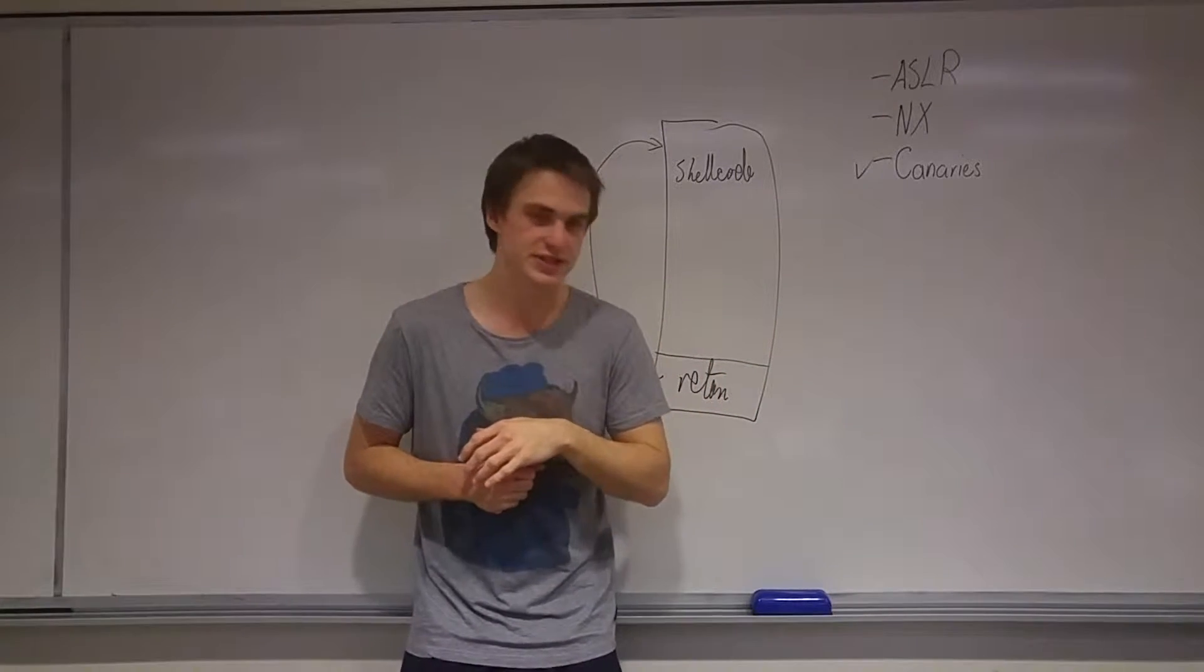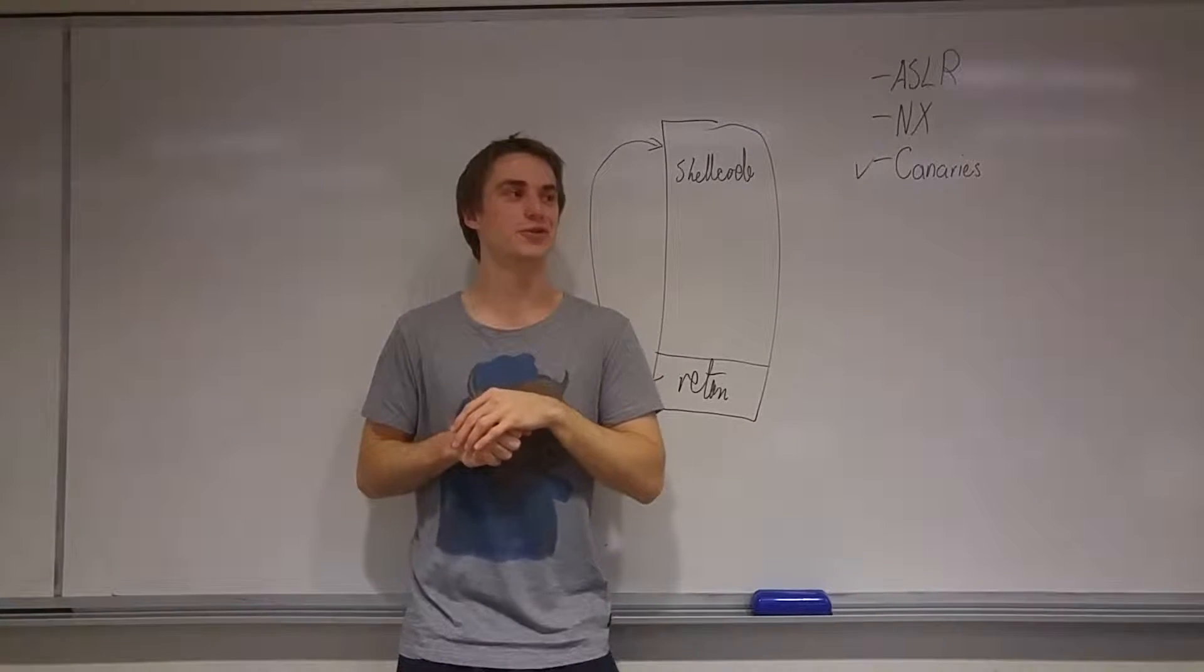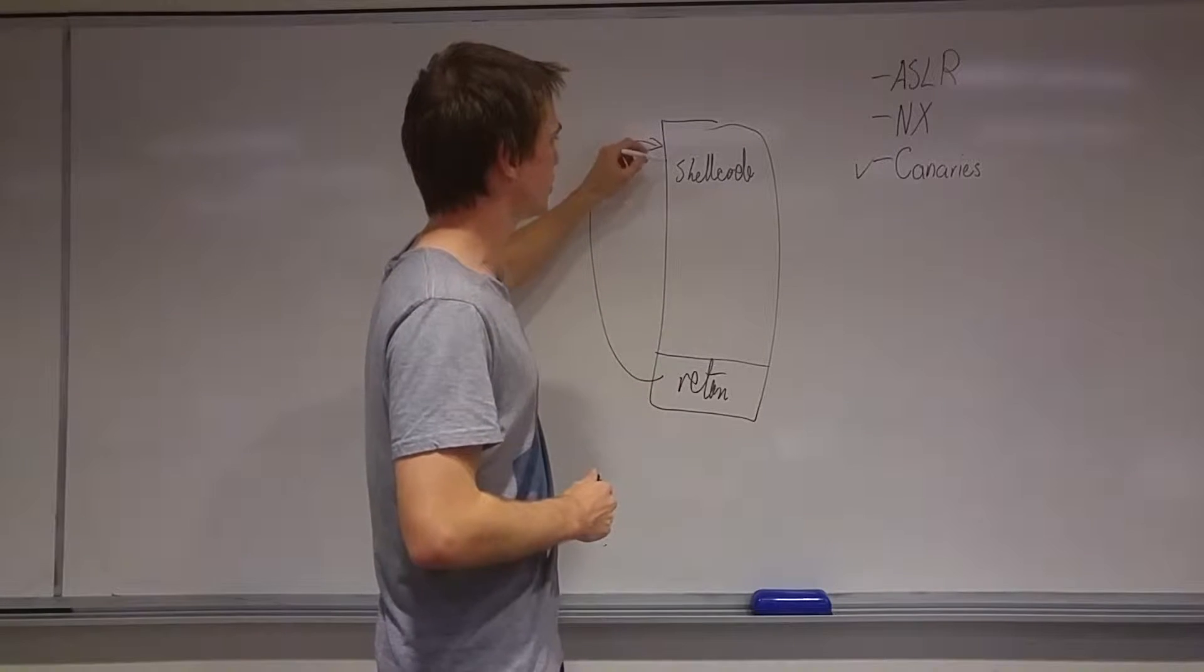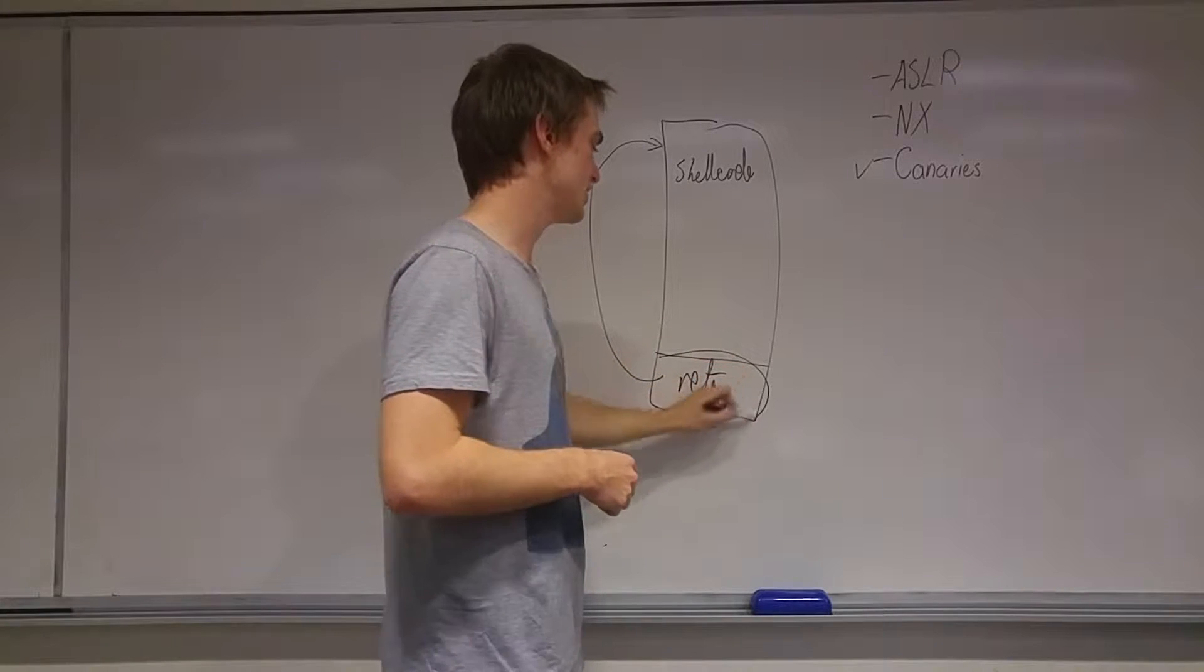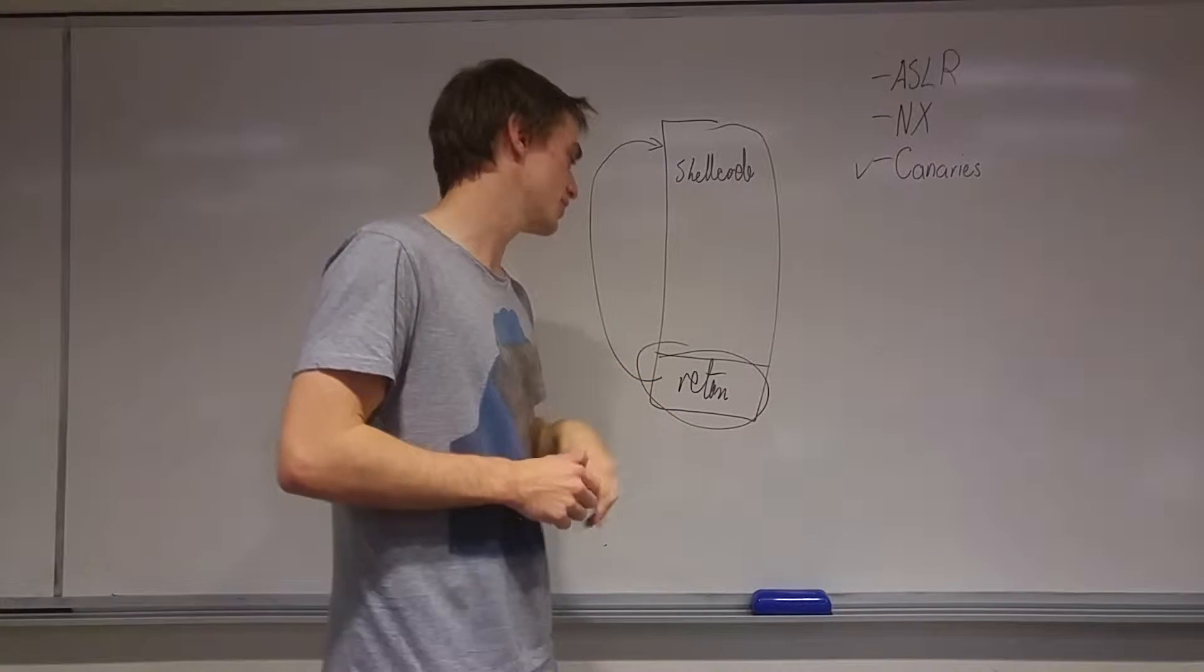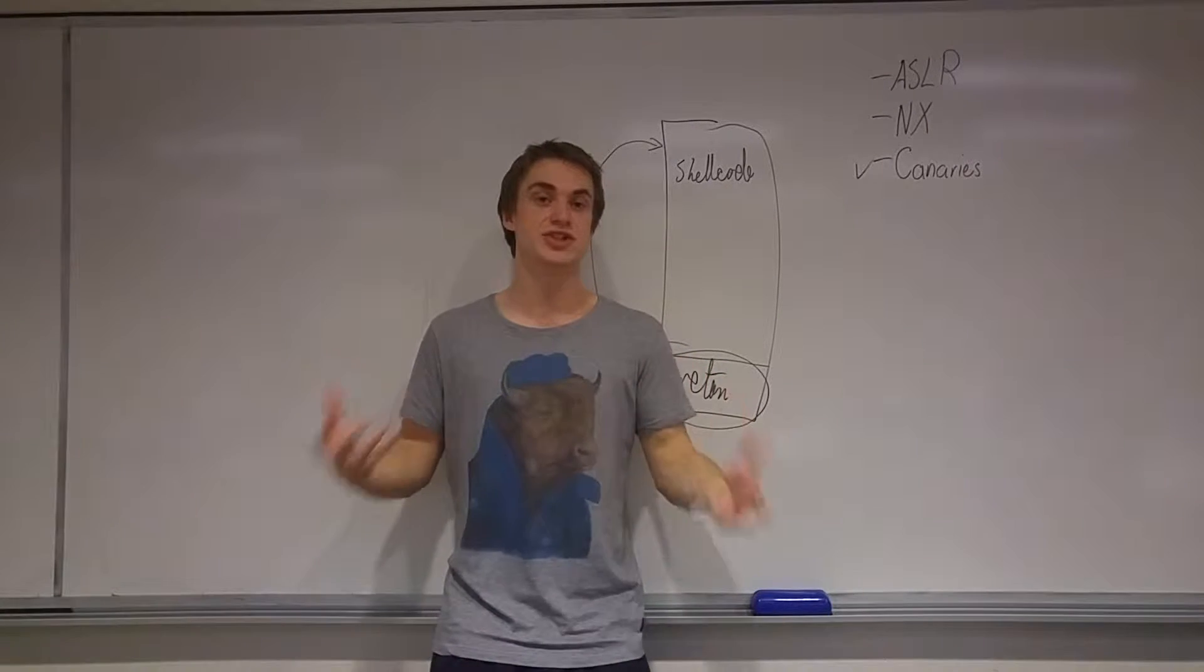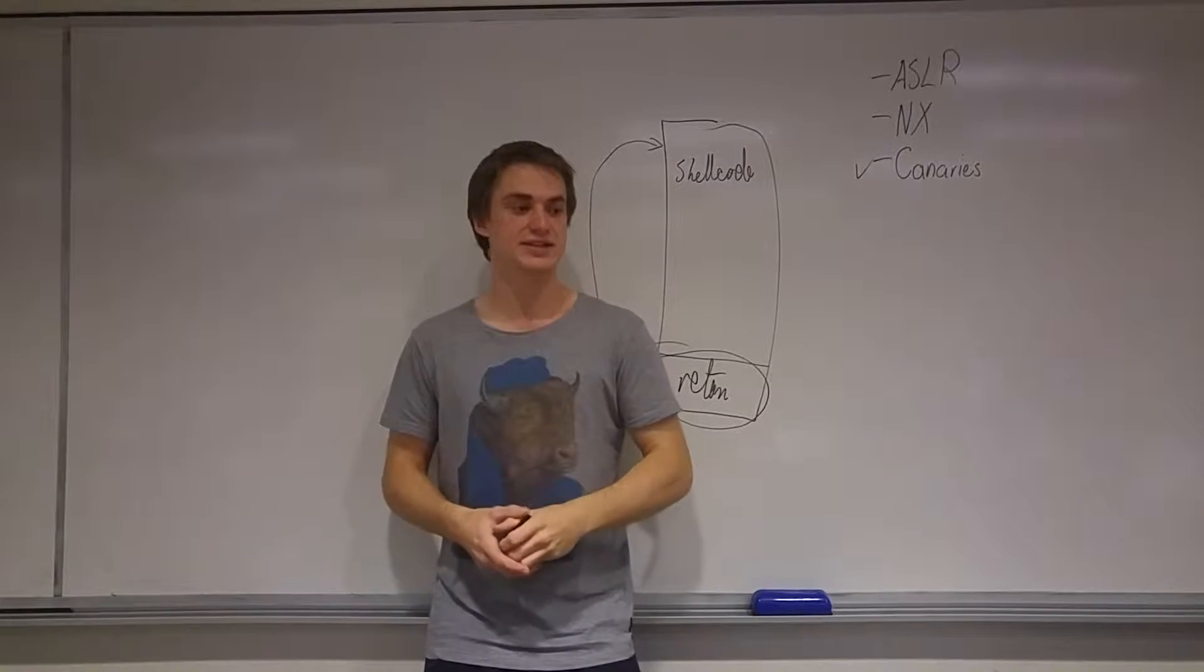So basically we use this thing called return-oriented programming, or ropping, as it's often called, or ret2libc. So basically what we do is, instead of returning to the shellcode here, what we do is we change the return address here. And what we do is we make it return to something that is already on the computer, which is why it's called ret2libc. So libc is a giant library, and it has a ton of things.